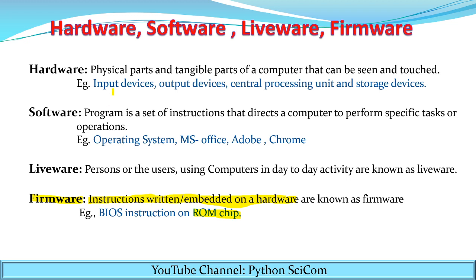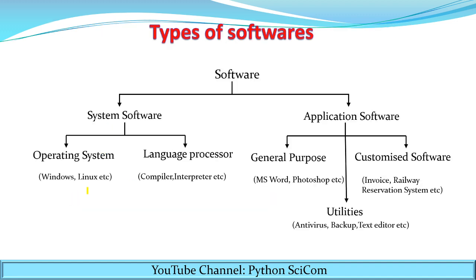So now all these terms are clear. Hardware can be seen. Software cannot be seen. Liveware means the persons who are using the computers. Firmware means the instructions which are written on the hardware. Now let's see the types of software. Software is broadly classified as system software and application software — these are the two main categories.